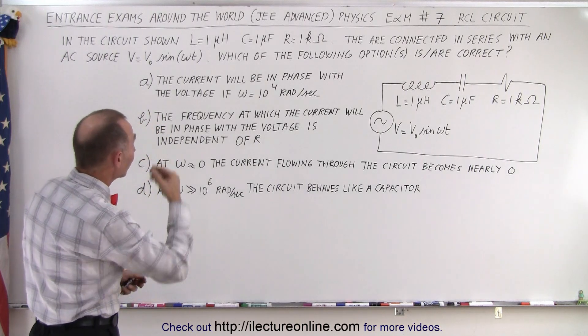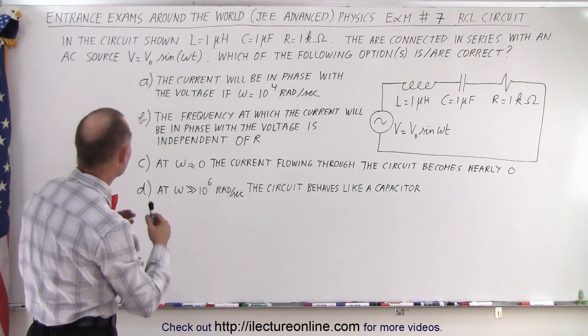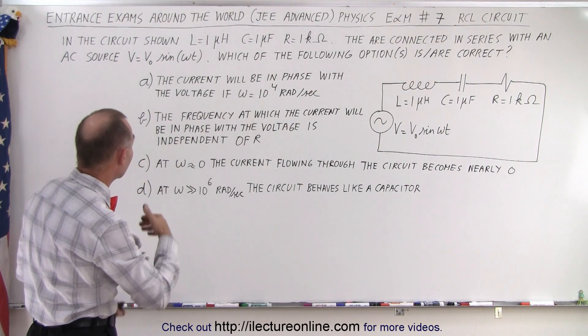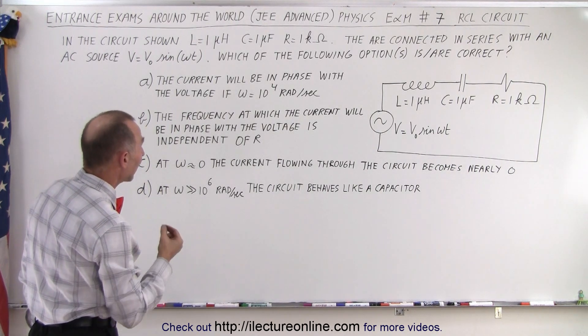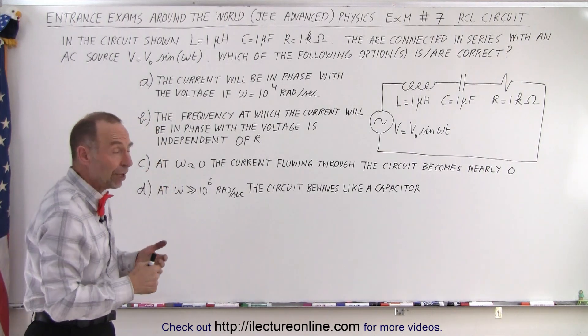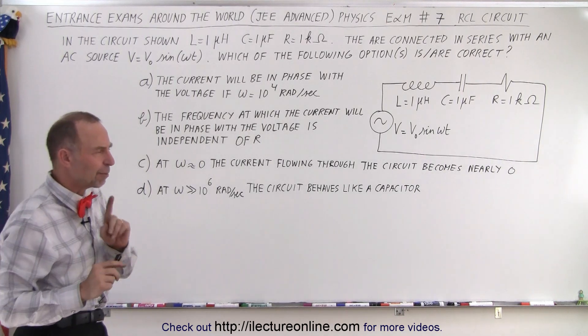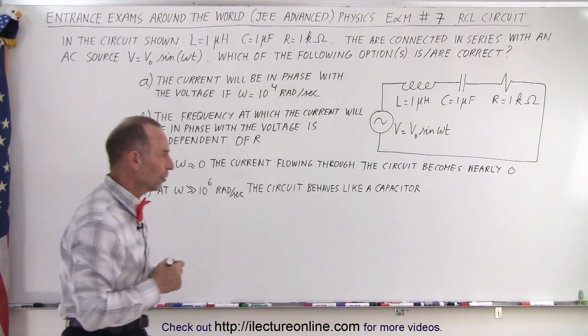They give us the values of the inductor, capacitor, and resistor connected in series with the voltage varying with time, and ask us which of these four statements are correct - it could be one, two, three, or all four. Let's read them carefully, but before we do, let's do something first.